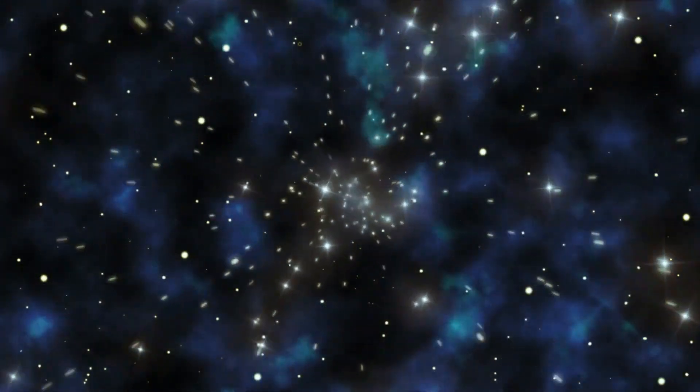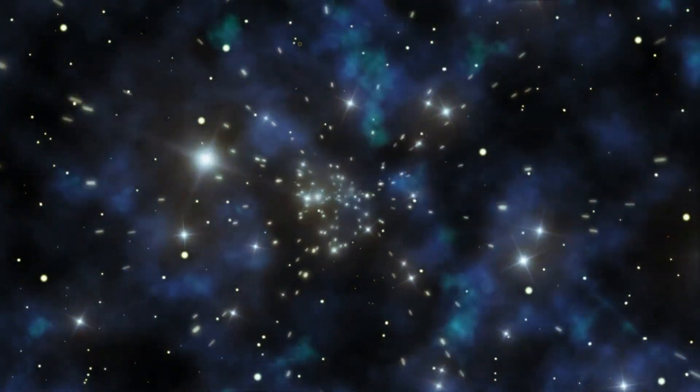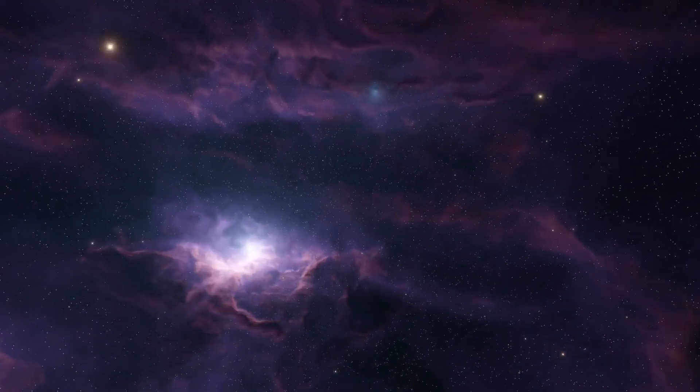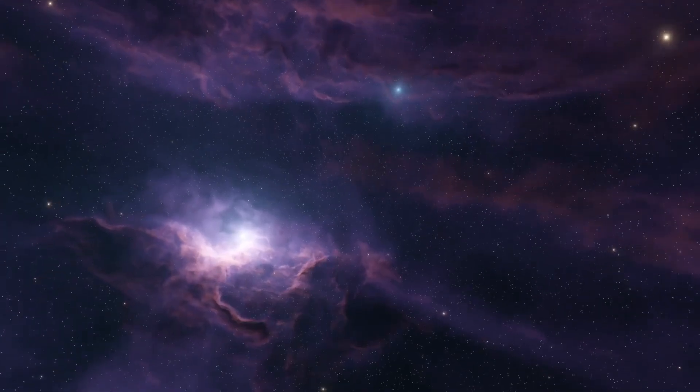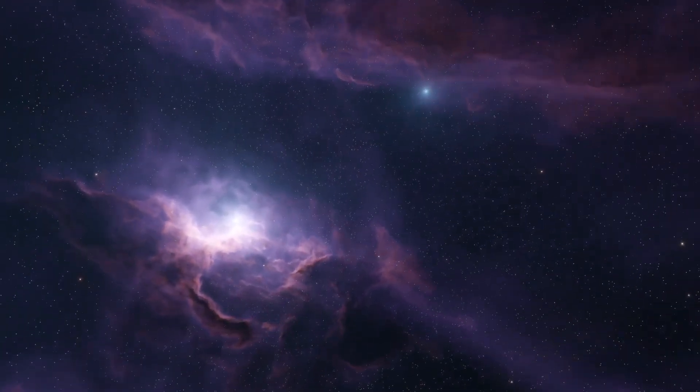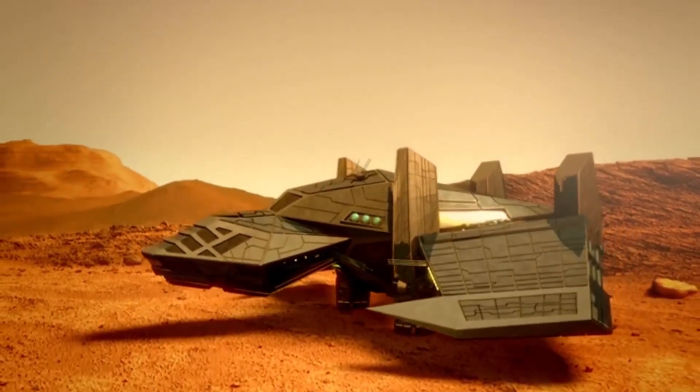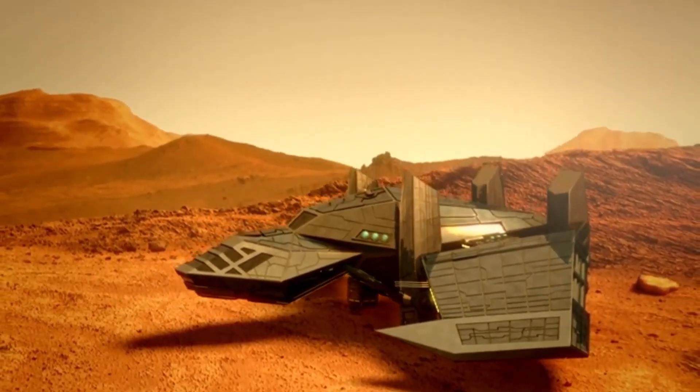For nearly 50 years, Explorer 1 has been transmitting valuable data back to Earth through NASA's Deep Space Network, bridging the gap between our earthly existence and the secrets that lie beyond. Currently, Explorer 1 is 24 billion kilometers away from Earth, standing as the farthest man-made object from our planet.